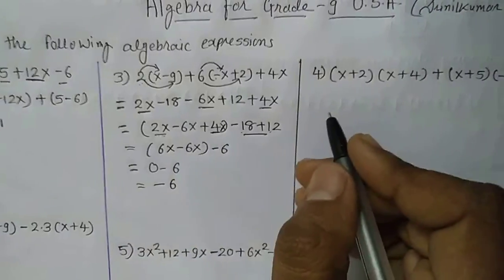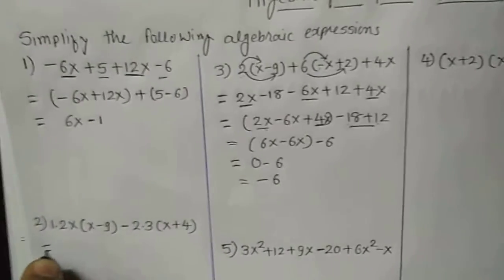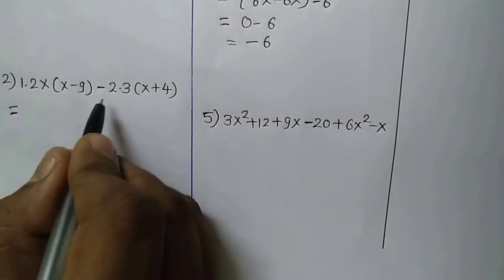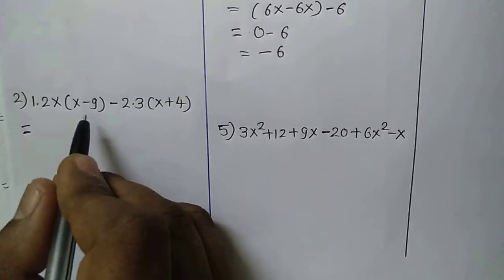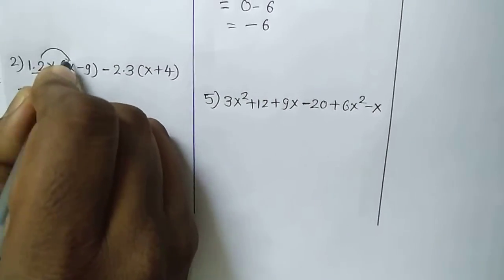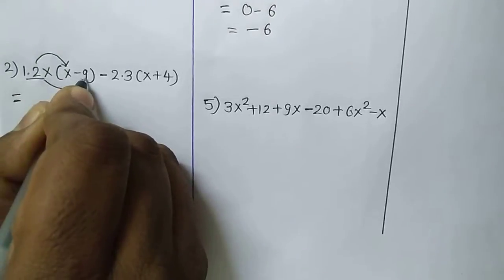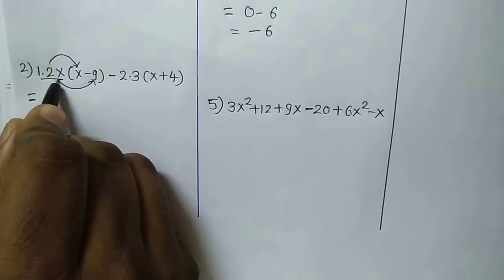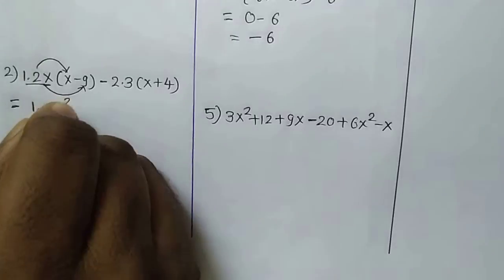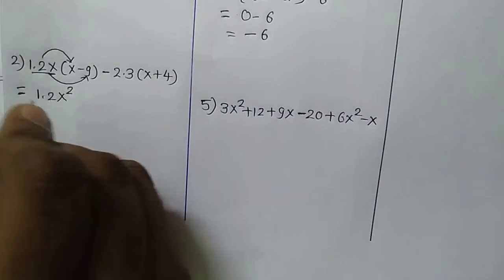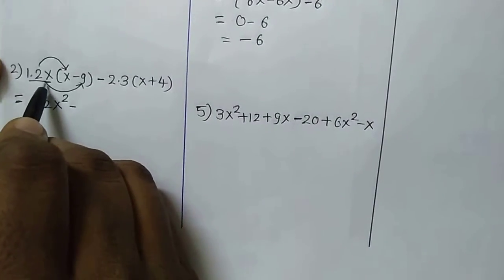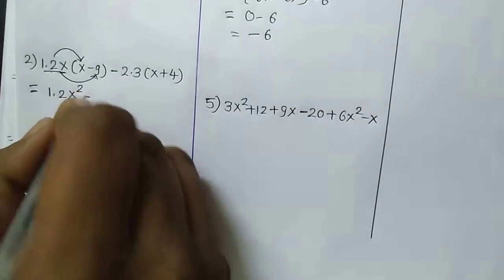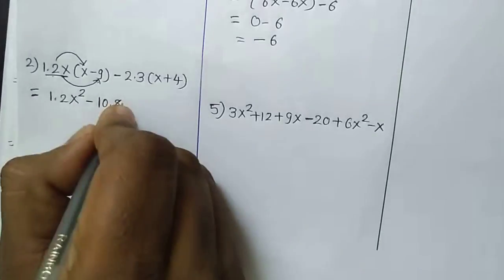Now let us see question number 2: 1.2x times bracket (x minus 9) minus 2.3 times bracket (x plus 4). As we did before, we will expand by multiplying. First, 1.2x times x gives 1.2x squared. Then 1.2x times 9 gives 10.8x, and since it is minus 9, it is minus 10.8x.